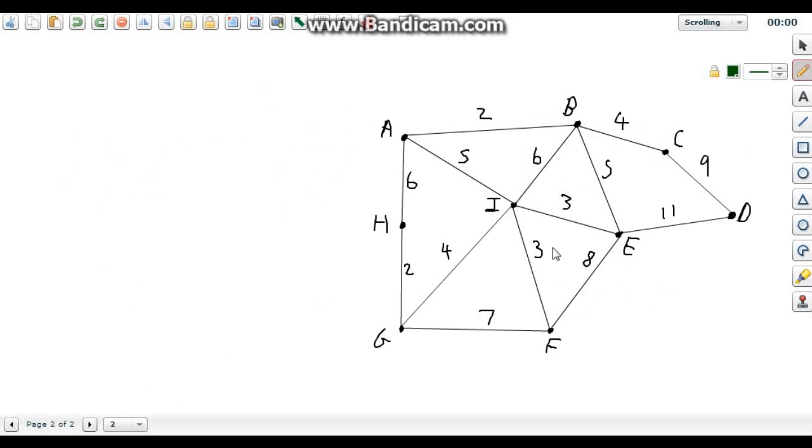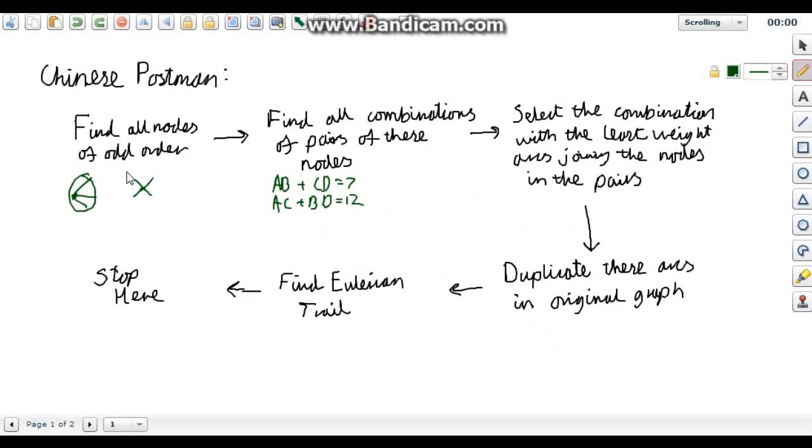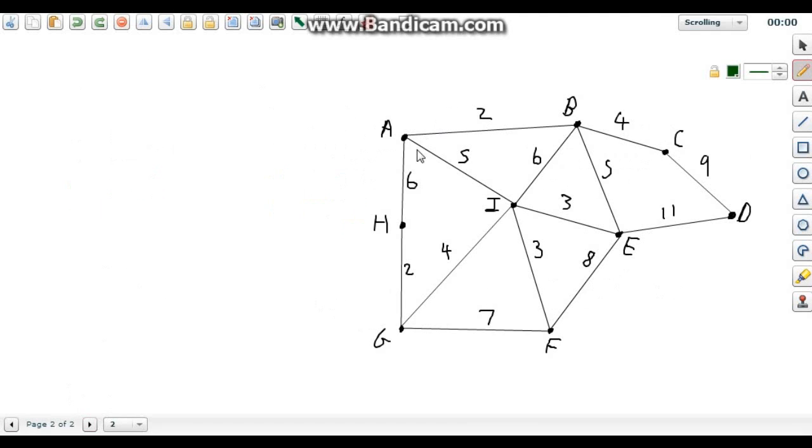So here you see I've drawn out a graph. The first step is to find all nodes of odd order. So let's see, this has three, so it's odd order. Two arcs. And this one is also three, so it's odd. And this one is three, so it's odd.